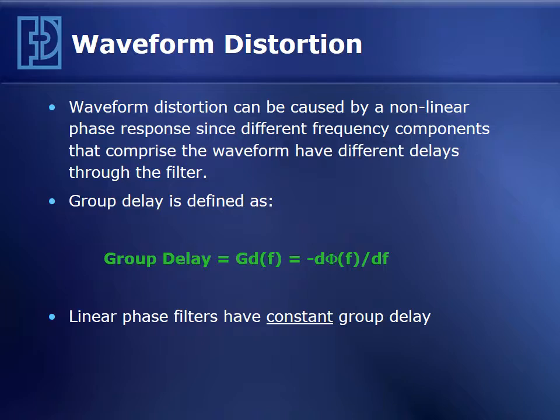A measurement of how good a filter's linear phase property is called group delay. Group delay is defined as the negative derivative of the phase with respect to frequency. If a filter has linear phase, then the derivative of the phase is a constant. Hence, we refer to filters with constant group delay — that's equivalent to saying the filter has linear phase.